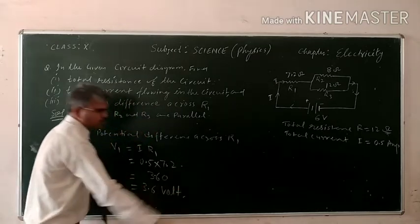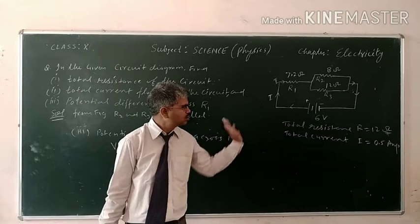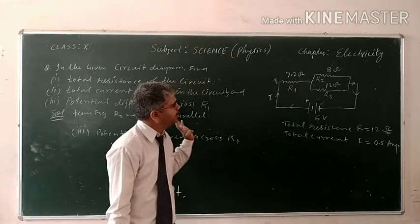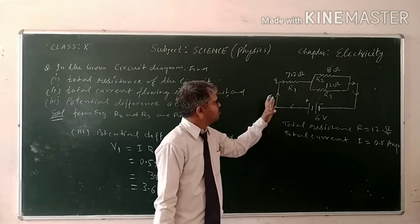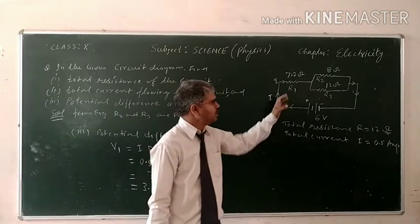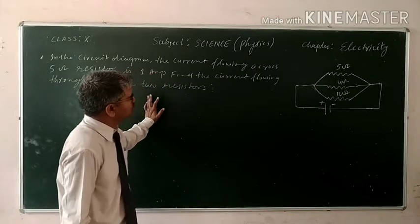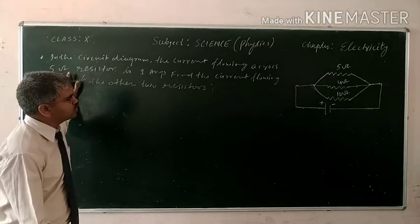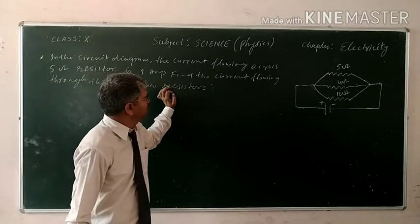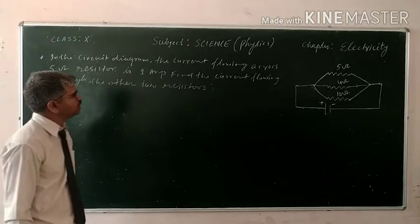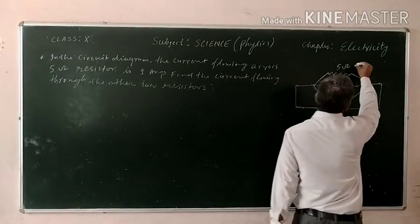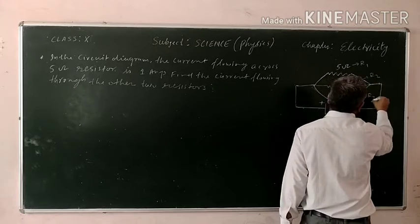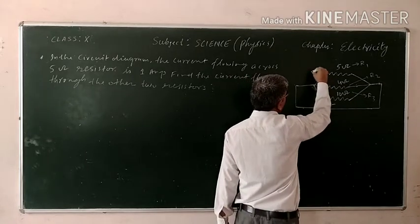So students, this is the way to calculate resistance, current, and potential from any one of the resistors. Now the next question. In the circuit diagram, the current flowing across 5 ohm resistor is 1 ampere. We have to calculate current flowing through other two resistors R1 and R2. Suppose that this is R1, this is considered as R2, and this is considered as R3. And the current across the resistor R1 is I1 and I2 across the R2 and I3 across the R3.